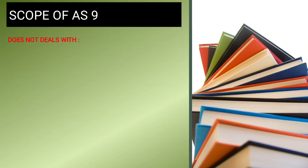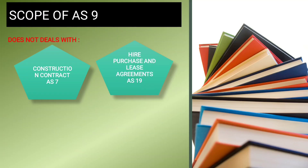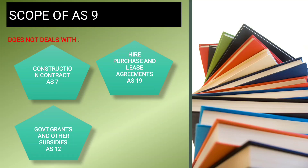Now we need to discuss the scope of AS9. Construction contracts are covered under AS7 and are therefore excluded from AS9. Hire purchase and lease agreements are covered under AS19, so they are also excluded from AS9.